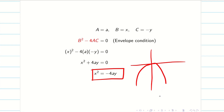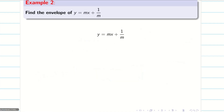That gives x² + 4ay = 0, so x² = −4ay. This is a downward-opening parabola and is the envelope for the given problem y = mx + am².